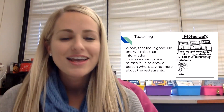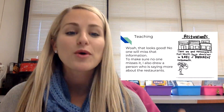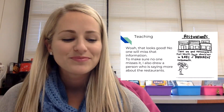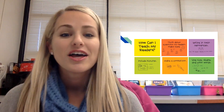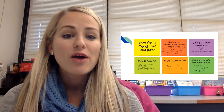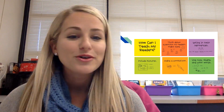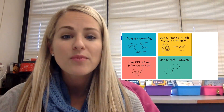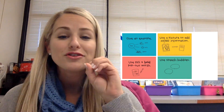No one will miss that information. And to make sure no one misses it, I also drew a little person who is saying more about the restaurants — they're saying 'come eat our delicious food.' I added that little speech bubble right there. So friends, we have learned so many strategies and we'll add this one to our chart of how can I teach my readers. We talked about thinking about different questions our readers might have, writing in twin sentences, including pictures, making a comparison, using size, shape, and color words, giving examples, using a picture to add more information, and like we've added today — big and bold pop-out words and speech bubbles.